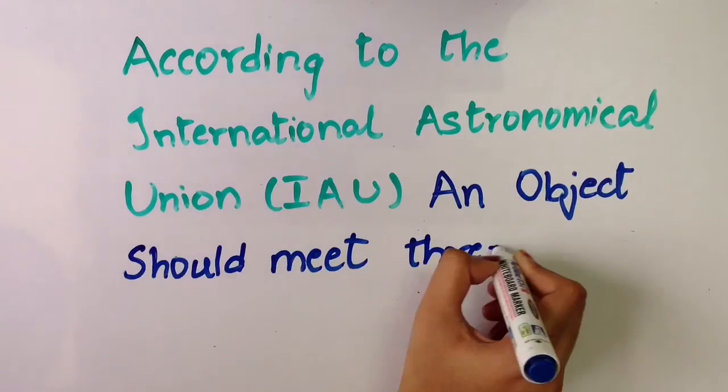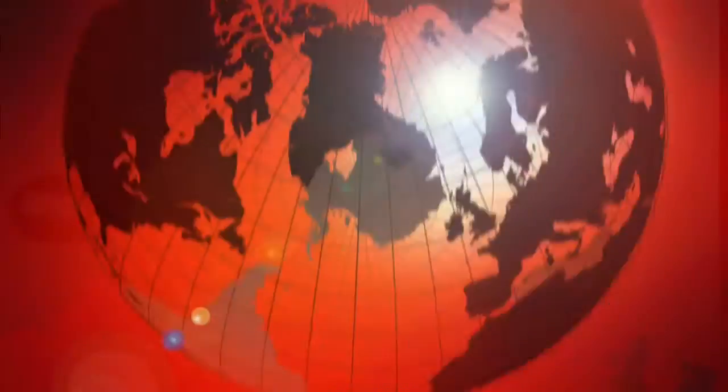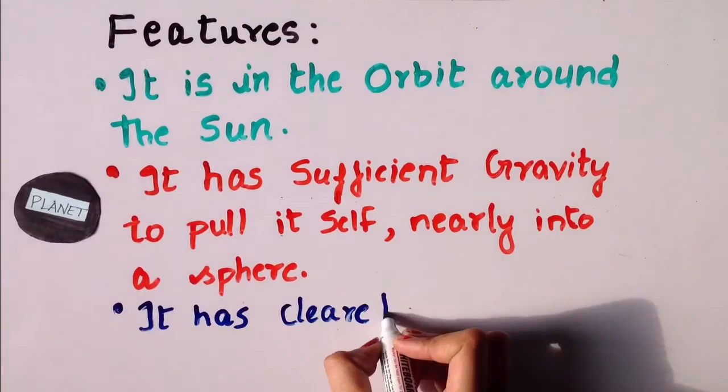According to the International Astronomical Union, an object should meet 3 criterion to be called a planet. It should be in the orbit around the sun and it should have sufficient gravity to pull itself nearly into a sphere.